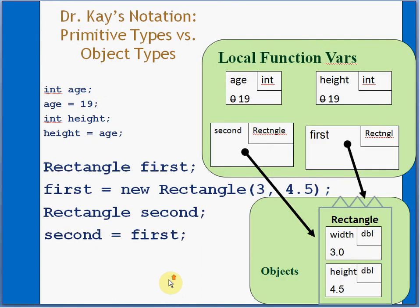Okay, so that's all well and good, but that leads to all sorts of problems. Because now if, for example, I change first's width, that's actually going to change the width of second as well.